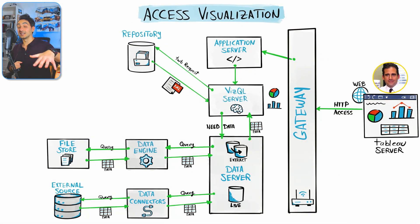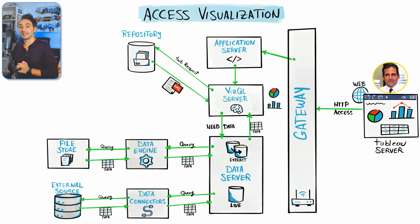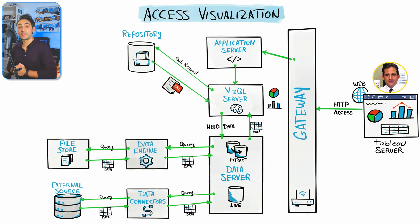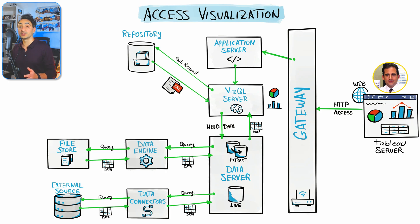There was a lot going on in this scenario, but we covered most of the Tableau Server components. Here's a summary: the gateway is responsible for forwarding the request to the right component. The application server is not responsible for the visualization process — that's the VizQL server, which is responsible for building the visualizations. The repository stores information about permissions and security — which users are allowed to access which dashboard.